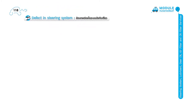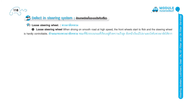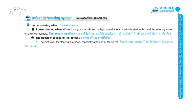Page 118. Defects in the steering system. Loose steering wheel: when driving on a smooth road at high speed, the front wheels start to flick and the steering wheel is hardly controllable. Possible causes of the defect: the joint lever for steering is eroded, especially at the tip of the tie rod.